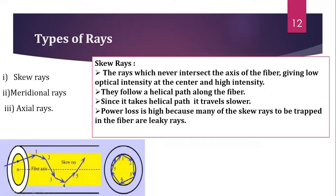Let us now discuss the different types of rays. The three types are: skew rays, meridional rays, and axial rays. Skew rays are rays which do not pass through the fiber axis and propagate around the axis in a zigzag path, moving on a helical path around the fiber. The view along the fiber axis and the ray path view along the plane normal to the fiber axis show this helical movement.